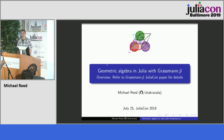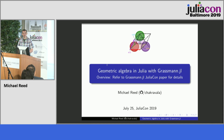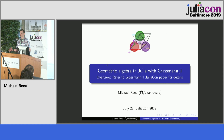Our last speaker is Michael Reed, and he's going to be talking about geometric algebra in Julia with Grassmann.jl. My talk kind of continues off where the previous talk was. I'm looking at the mathematical foundations of geometric algebra and differential geometry. It's a bit of a mathematical talk, so if it doesn't make sense right now, you can go home, look at the repository, try out some examples to build your intuition, and then revisit this presentation to see what's really important.